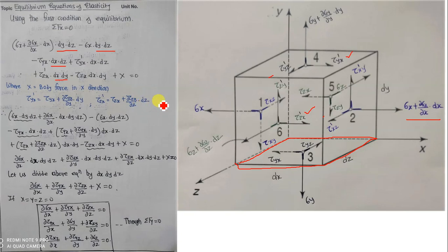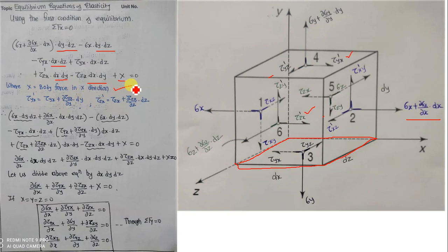Similarly on the opposite z plane, tau zx acts in the negative x direction with area dx·dy. Plus X, where X is the body force in the x direction — we consider the body force positive. Note that tau yx' equals tau yx plus its small increment, and tau zx' equals tau zx plus its small increment.